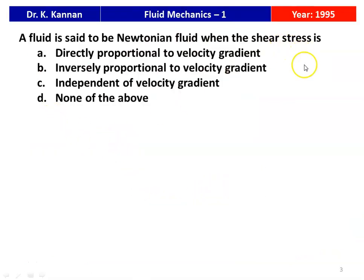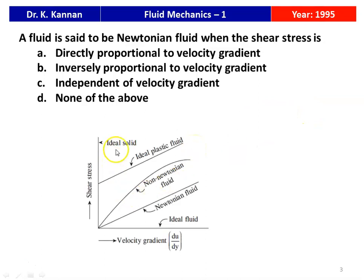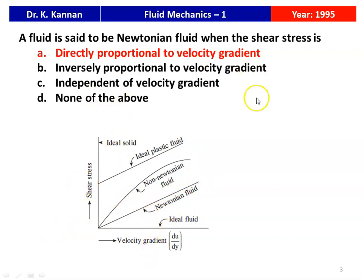Question number one from the 1995 GATE Question Paper: A fluid is said to be a Newtonian fluid when the shear stress is — (A) directly proportional to the velocity gradient, (B) inversely proportional, (C) independent of the velocity gradient, or (D) none of the above. The answer is (A): directly proportional to the velocity gradient. This is the linear relationship between the velocity gradient and the shear stress.